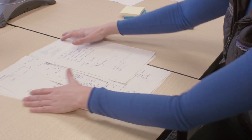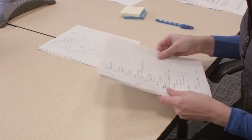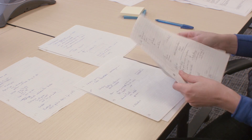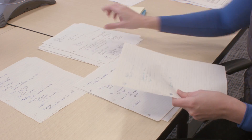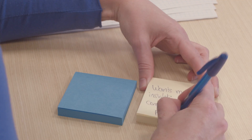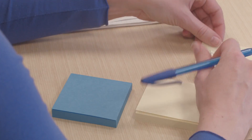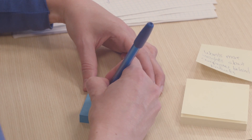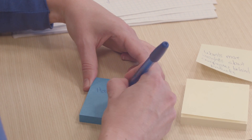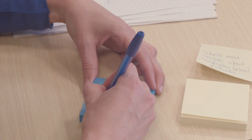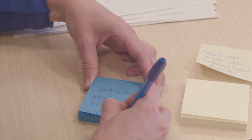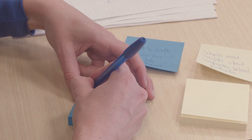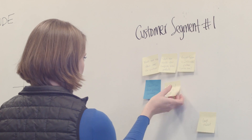First, gather your interview notes and group them by customer segment. Then write the key insights from each interview on a post-it note. If possible, use different color post-its for positive versus negative insights towards the need you're trying to address. You may also want to add post-its for other considerations such as market size.